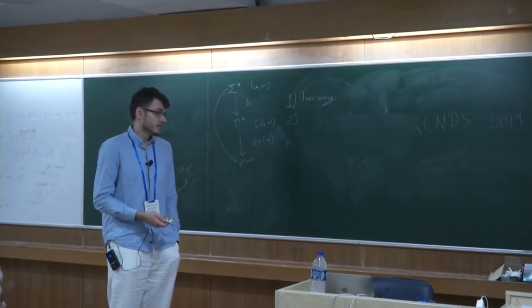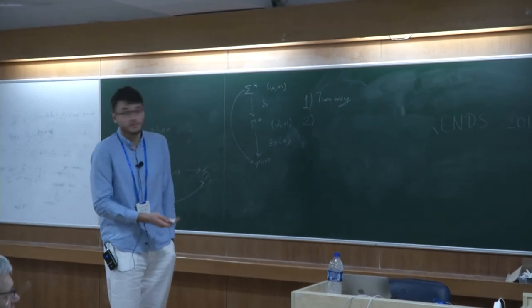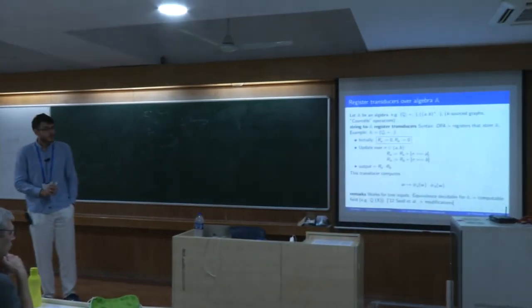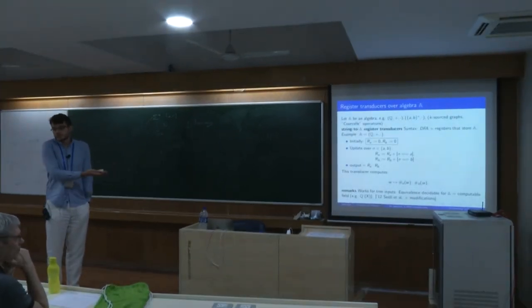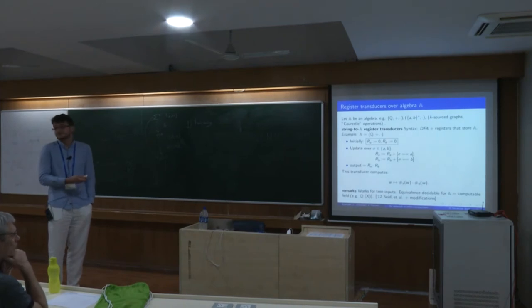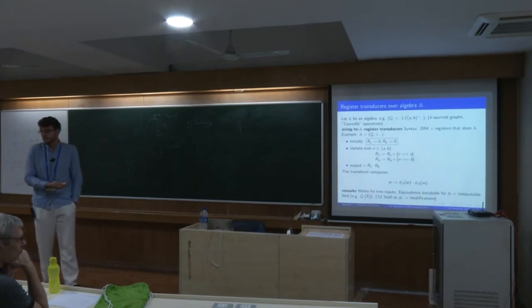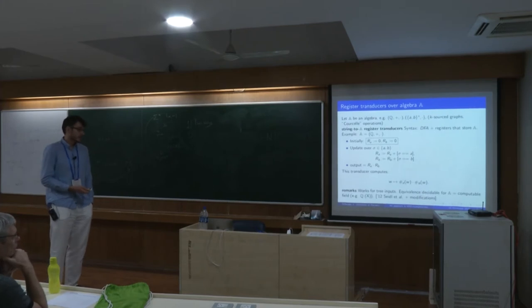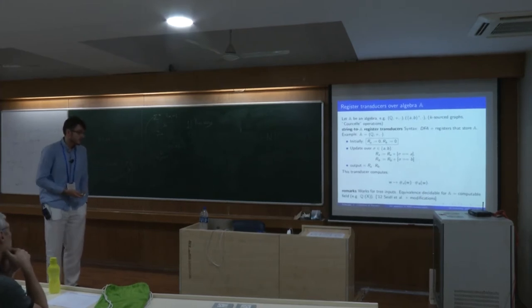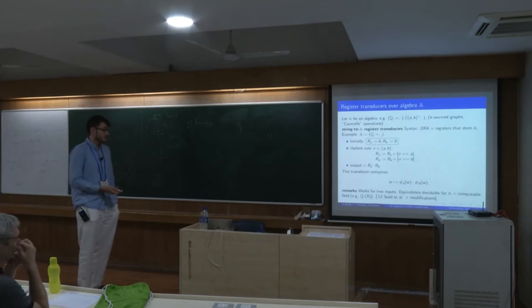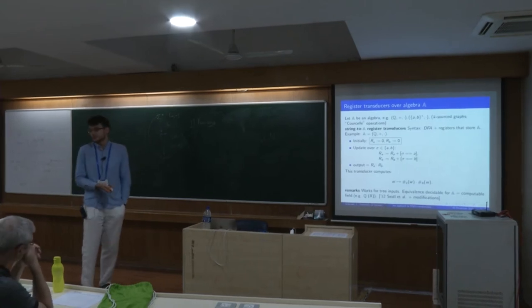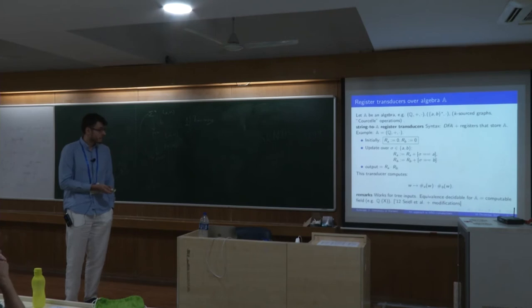Let's remark that even though it's presented for string to A, the equivalence result holds also for the case where trees are in the input. And as already mentioned, equivalence is decidable in case A is a computable field, for example, rational numbers or field of rational functions. But actually we will use another ring.